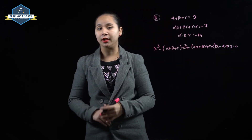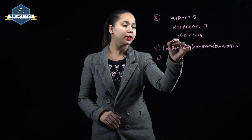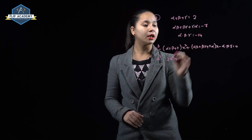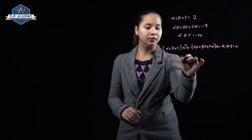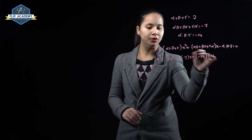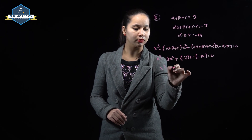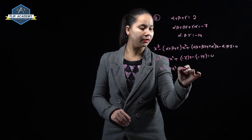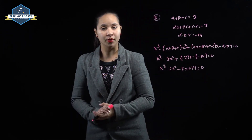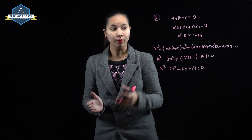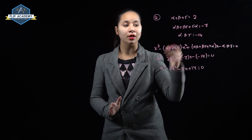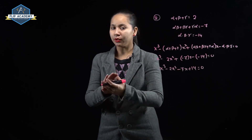Substituting all values: x³ - 2x² + (-7)x - (-14) = 0. So the required cubic polynomial is x³ - 2x² - 7x + 14 = 0, where α + β + γ = 2, αβ + βγ + γα = -7, and αβγ = -14. Question 2 is complete here.